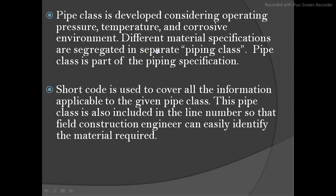Pipe class is developed considering operating pressure, temperature, and corrosive environment. Different material specifications are segregated in separate piping classes. Pipe class is part of the piping specification. A short code is used to cover all the information applicable to the given pipe class. This pipe class is also included in the line number so that the field construction engineer can easily identify the material required.